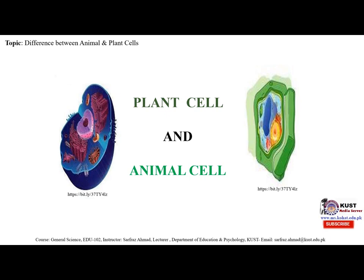Plant cells are eukaryotic cells with a true nucleus along with specialized structures called organelles that carry out certain specific functions. Plant cells vary in several fundamental factors from other eukaryotic organisms. Both plant and animal cells contain a nucleus along with similar organelles. One of the distinctive aspects of a plant cell is the presence of a cell wall outside the cell membrane.